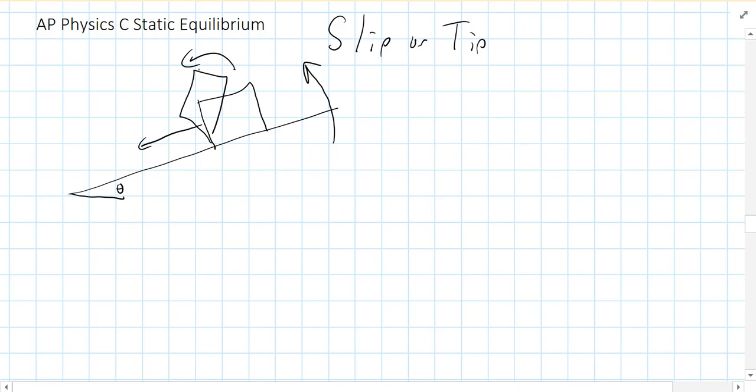And that depends on the angle of the incline and what your coefficient of friction is and the geometry of the box. So which is going to happen first, slip or tip? What you do is you figure out the largest angle that can occur before each one happens, and you compare the two angles and see which angle happens first.